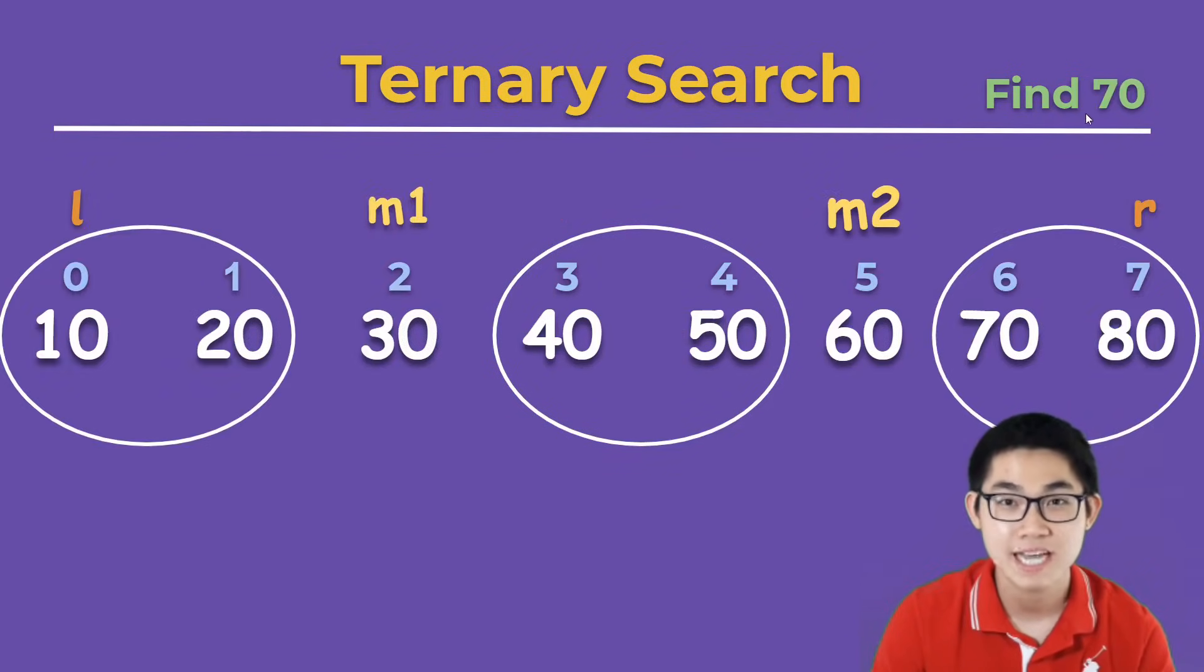Let's try to find number 70. We already have m1 and m2. So we look at their contents. This is not 70. That's not 70. But since 70 is larger than 60, it must be in the third group. So we simply move l to the third group. And we repeat the process.